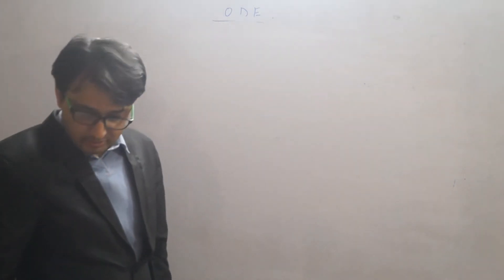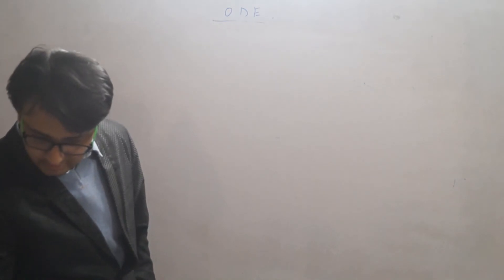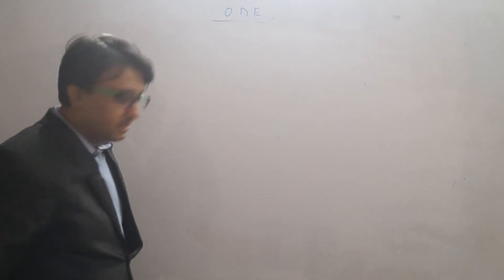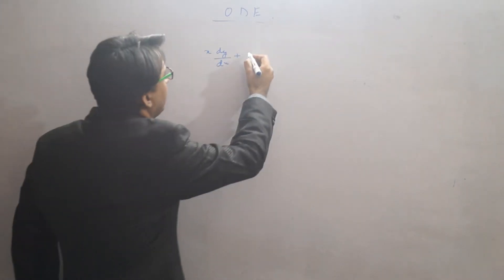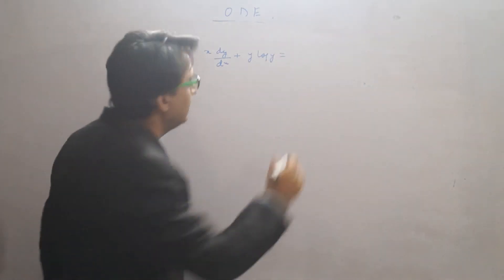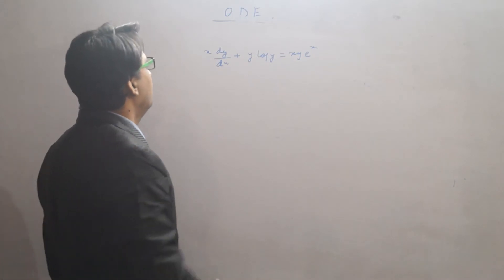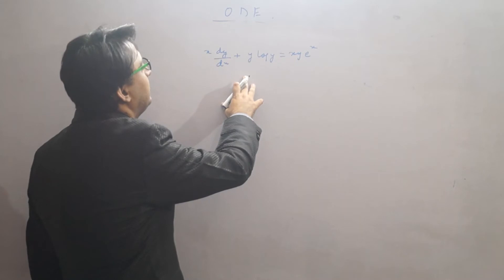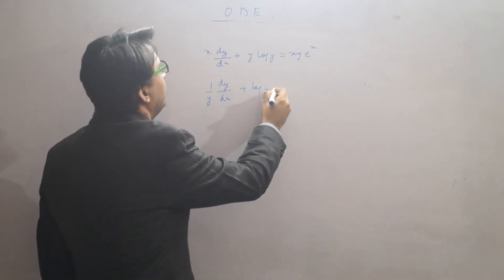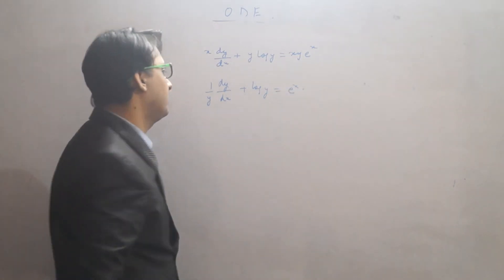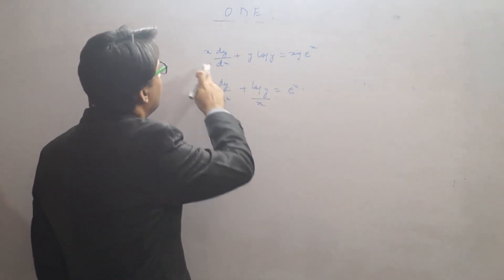We will start. We have already done the theory. I will take some questions. The first question I will take up is Bernoulli itself. The question is: x dy/dx plus y log y equals xy·e^x. What we do is divide this equation throughout by xy. So this becomes (1/y) dy/dx plus (log y)/x equals e^x.